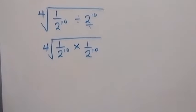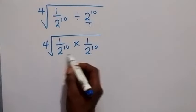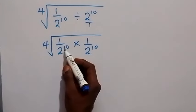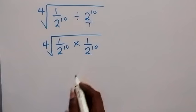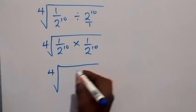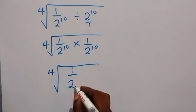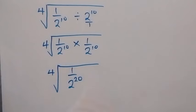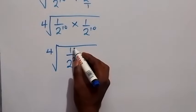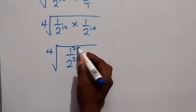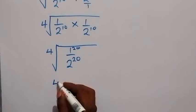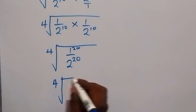From here we multiply these together. They have the same base, so from the law of indices we write just one base and add the powers. This gives fourth root of 1 over 2 raised to power 20 — that's 10 plus 10. Of course 1 raised to power 20 is still 1, so we can write it as the fourth root of 1 over 2 raised to power 20.